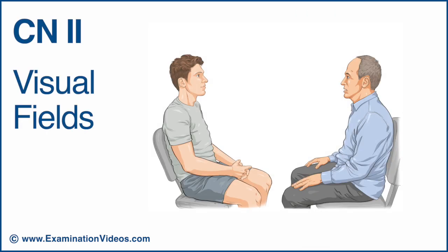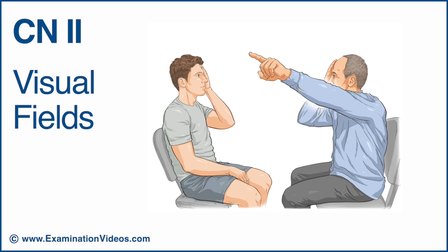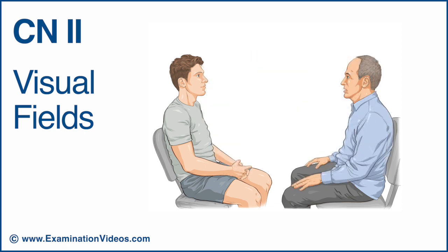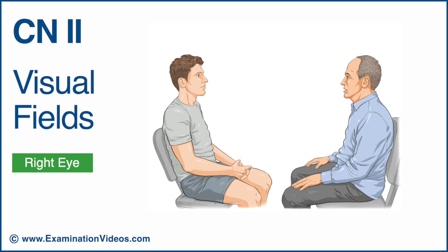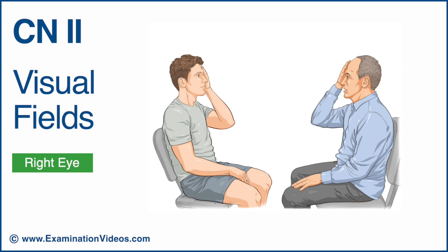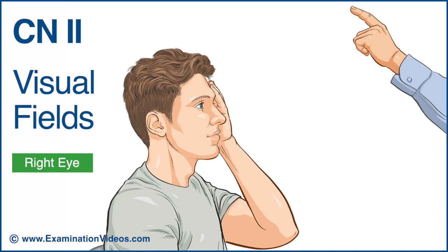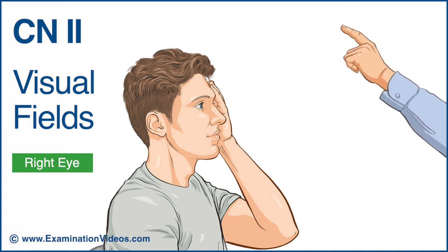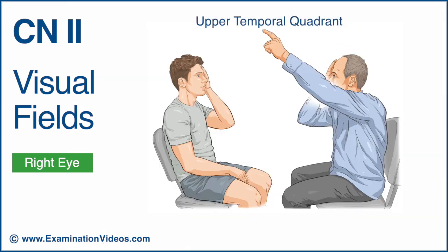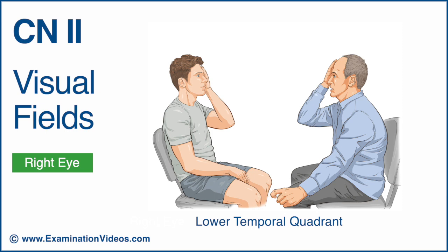There are several methods for examining the visual fields. This video presents the examination of peripheral fields using a moving finger. Position yourself about 3 feet in front of the patient at eye level. To test the right eye, ask the patient to cover their left eye with their left palm. Cover your right eye with your right hand and ask the patient to look directly at your left eye. To test the upper temporal quadrant, hold your left hand with the index finger extended upwards and outwards, equidistant between you and the patient. Ask the patient to report when they can see your index finger wiggling. If the patient is unable to see your wiggling finger, slowly bring your hand towards the center until they indicate they can see the movement. Compare the patient's visual field with yours. Repeat the procedure for testing the lower temporal quadrant.